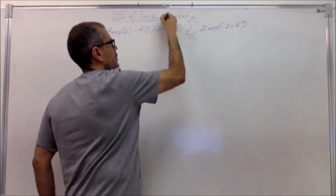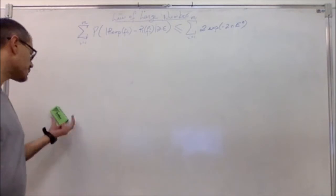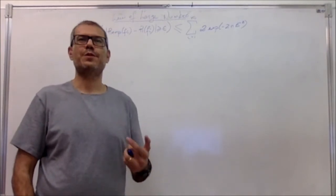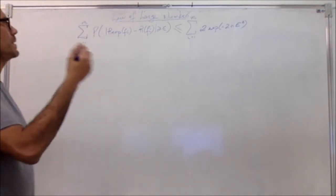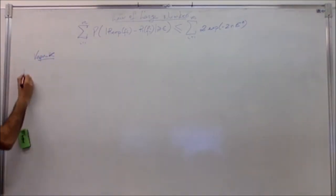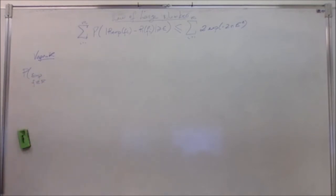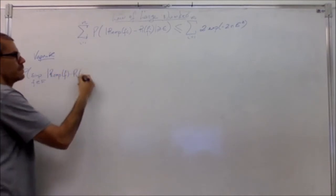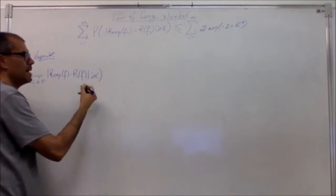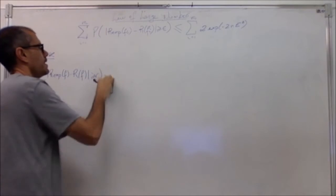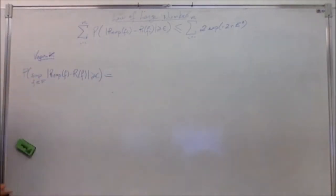There is a very useful short notation worth introducing now. Vapnik was interested in formulating statistical learning theory as the probability of the supremum value — for every function f inside some hypothesis space, some learning bias — of the empirical risk of that function minus the expected risk of the same function being greater than or equal to epsilon.